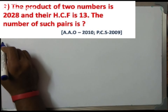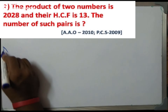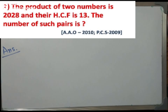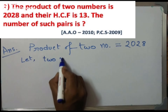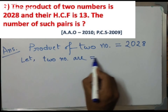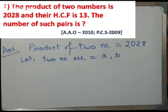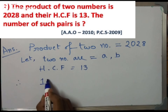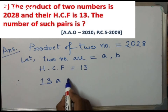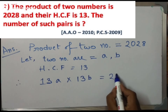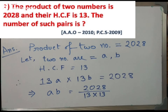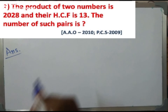Next: the product of two numbers is 2028 and their HCF is 13. Find the number of such pairs. Since HCF is 13, let the two numbers be 13A and 13B. So 13A × 13B = 2028. Solving: AB = 2028 ÷ (13 × 13) = 12. The relation between such pairs must be co-prime, meaning their HCF equals 1.